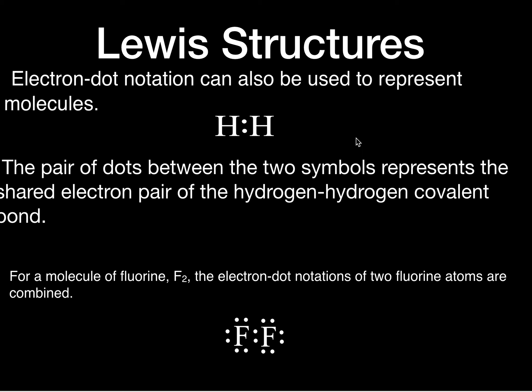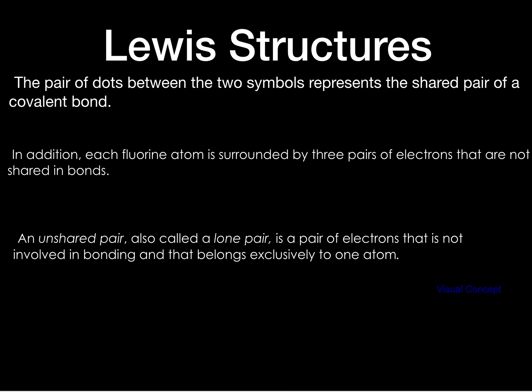Lewis structure. Electron dot notation can also be used to represent molecules. The pair of dots between the two symbols represents the shared electron pair of the hydrogen-hydrogen covalent bond. For a molecule of F2, the electron dot notation of two fluorine atoms are combined. The pair of dots between the two symbols represents the shared pair of a covalent bond.